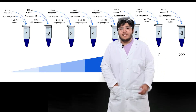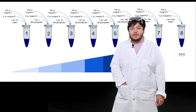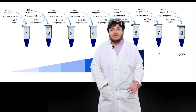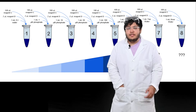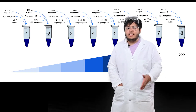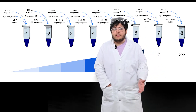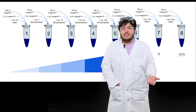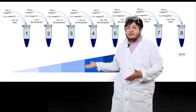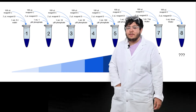Now that we have all our reagents, we can set up this experiment. All we have to do is add two microliters of reagent D and 180 microliters of reagent C into each of the tubes shown.